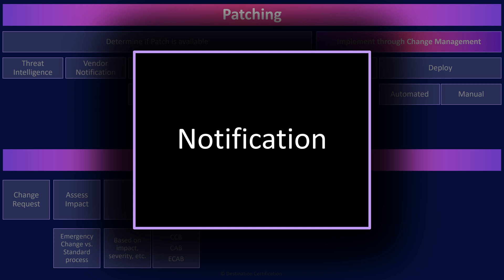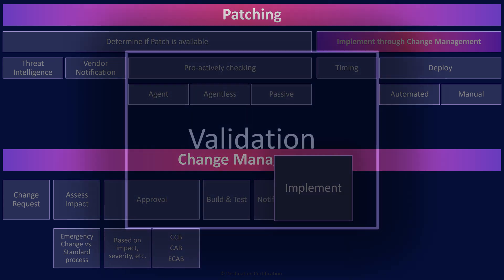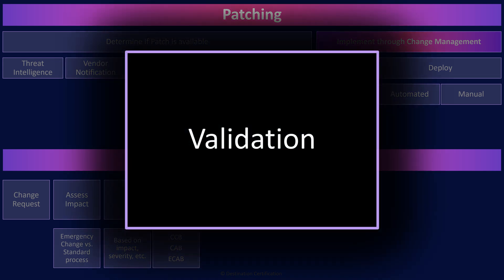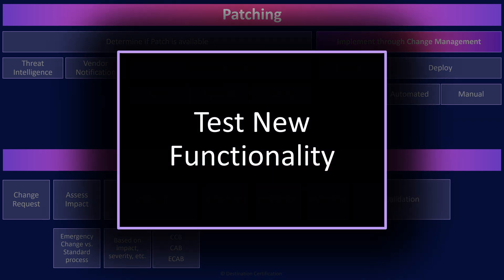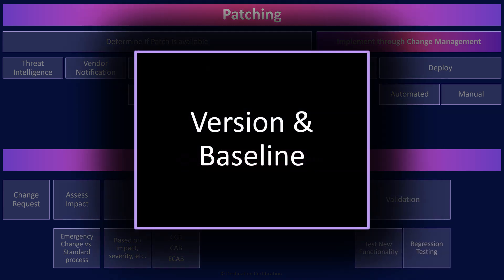Relevant stakeholders who need to be notified include anyone impacted by the change: system owners, management, administrators, customers, and maybe even regulators. Implementation is where we make the change, which then requires validation. Testing verifies that the new functionality the change was supposed to provide is working correctly. Regression testing specifically validates that existing functionality was not broken by the implementation of the change. Once a change has been made, we need to check whether things need to be updated, including master images, configuration baselines, disaster recovery plans, etc.